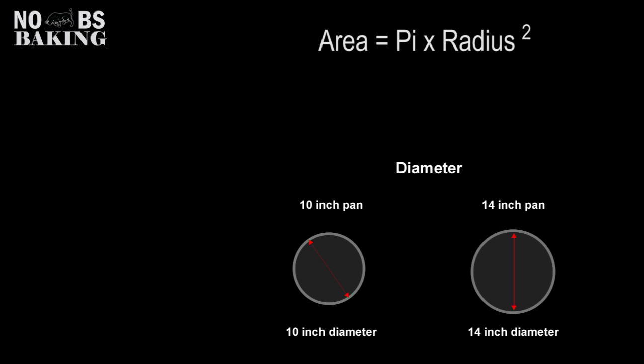Diameter is the size of the pan, i.e. 10 inch, 14 inch, etc., and is confirmed by this measurement.